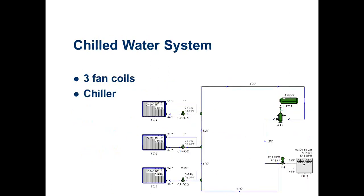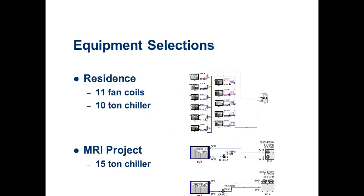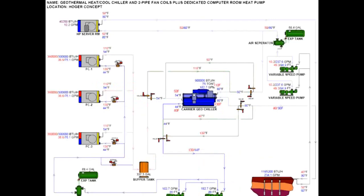On the chilled water side, we can do fan coils, chilled beams, air handlers, chillers, cooling towers, dry coolers, geothermal, radiant cooling and heating, and specialty stuff like MRI equipment. The software will actually select and size your pumps, expansion tanks, and valves. But like with every software, it's garbage in, garbage out — you have to give it good data for it to help you size equipment, piping, and things like that.